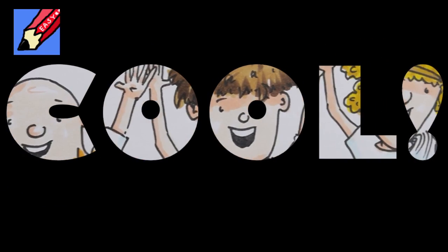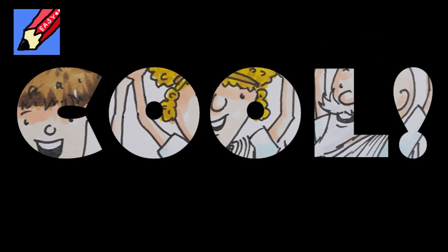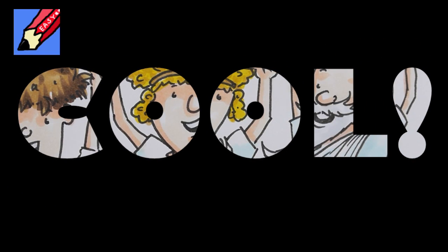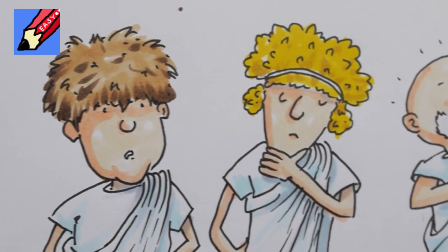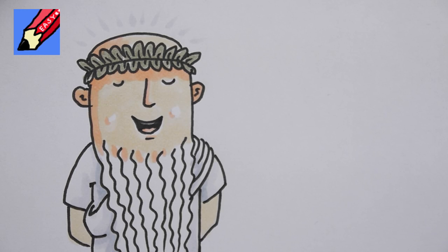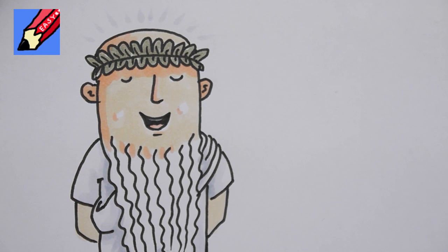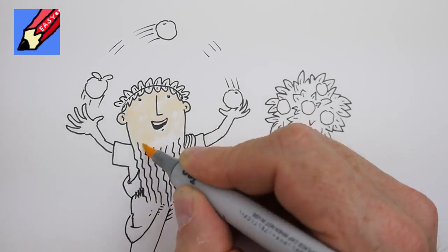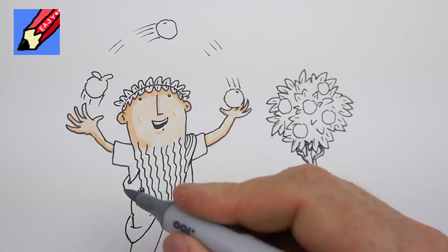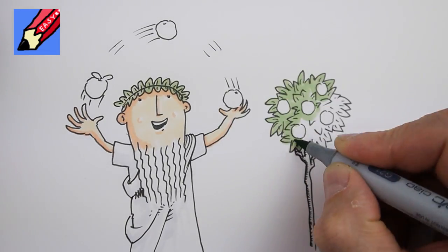That is so cool, said his ancient Greek friends. Or something like that. Have you got any more great ideas like that? Lots, said Euclid, but that's enough for today. But tomorrow, I'll show you what happens if we have three points instead of two.